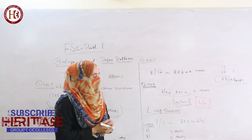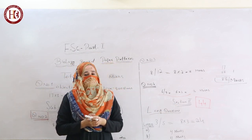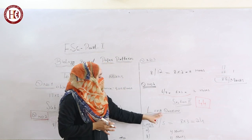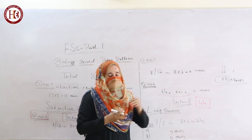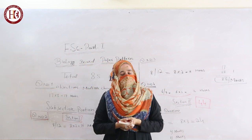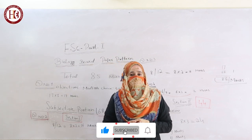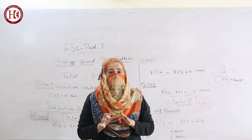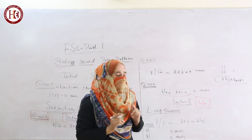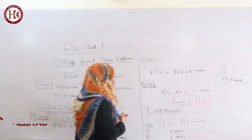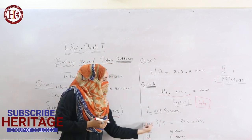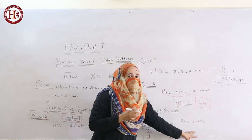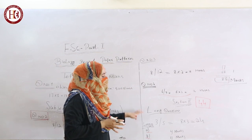After solving Section No. 1, you move to Section No. 2, which is the Subjective Portion with Long Questions. There are 5 long questions given, and you have to attempt any 3. Every long question has 2 portions: Part A and Part B. Part A consists of 4 marks and Part B also consists of 4 marks, making each long question worth 8 marks. Three long questions collectively consist of 24 marks.